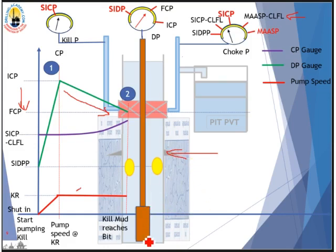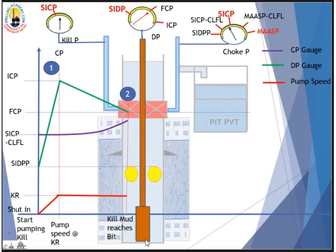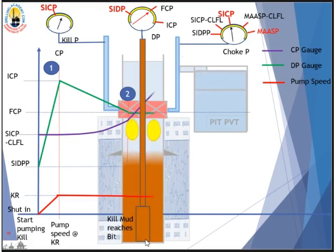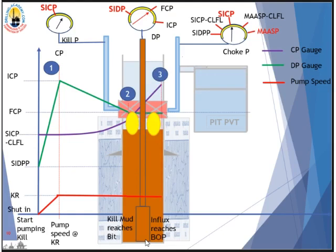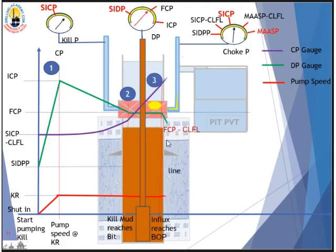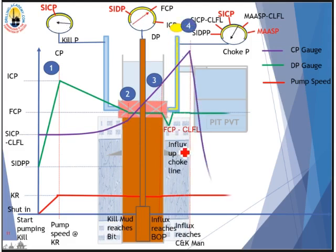Stage three: kill mud starts getting into the annulus. We still watch the drillpipe pressure gauge and monitor casing pressure gauge not exceeding maximum allowable — deducting choke line friction loss — while influx is below the shoe. When the influx reaches the BOP, we expect to see casing pressure increase higher. Remember there's a lag time for choke adjustment to be reflected on drillpipe pressure gauge. As gas is displaced into the choke line, we expect drillpipe pressure to drop by the amount of choke line friction loss. We need to close the choke to compensate for this loss and get it back to Final Circulating Pressure.